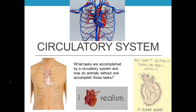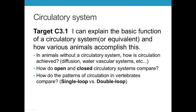Today's topic is the circulatory system and the tasks that animals have to accomplish by using it. There are some organisms that don't have a circulatory system, and we'll get into how they accomplish those same tasks without one. Your targets are the basic function, how different animals accomplish it, and the different types of circulatory systems. These are listed on your notes and I'll have this up at the end of the notes as well.